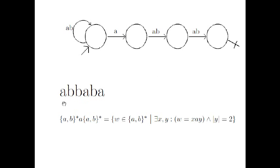Let's see an example of execution with a concrete word. What we'll see is that there are actually several possible executions. In one possible execution, after reading the first A we can stay in the first state. We read a B and stay, read B and stay, read A and stay, read B and stay, and read the last A and stay in the first state. Since the first state is a rejecting state, the word is rejected in this concrete execution.